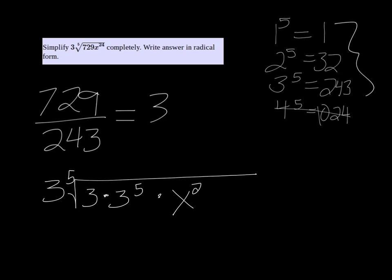So if we break it down to x to the 20 and x to the 4th, that way the 20th power will give us a multiple of 5, and that's what we want. We want to be able to pull out all of our 5s.